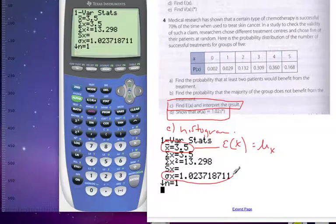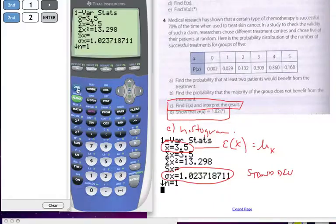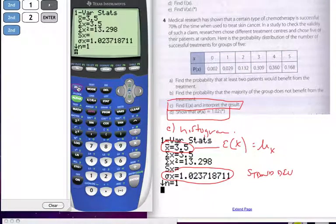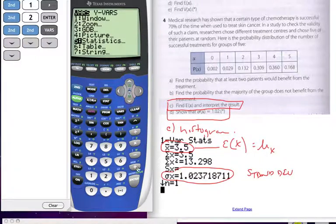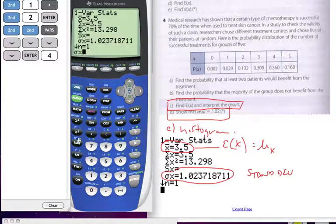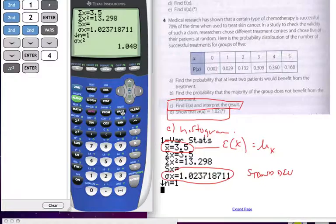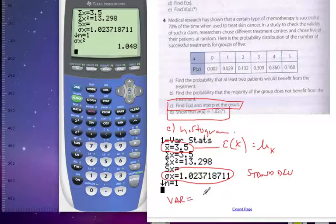This value here is the standard deviation. If I want to find the variance, what do I do with that value? I take that value and I square it. So if I go to my calculator, I could go to variables, and I can go to statistics. Find my sigma, which is standard deviation, which is number 4, and I can square it. And this here is my variance. So my variance is equal to 1.048.